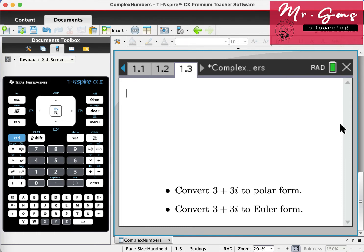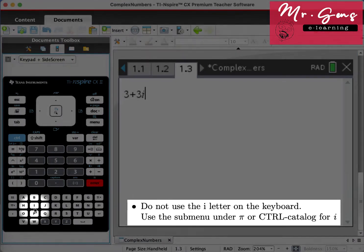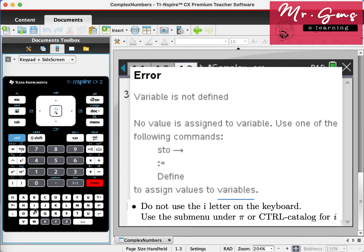Now let's convert rectangular form to other forms. Another important warning here: Don't use this I. It's the letter I, and your calculator recognizes it as a variable, and it doesn't work.